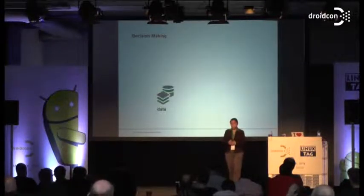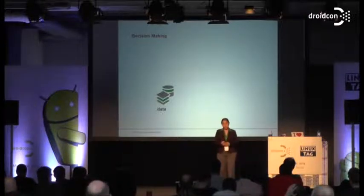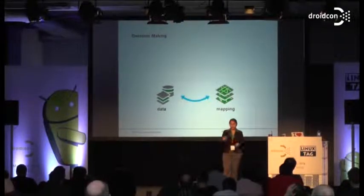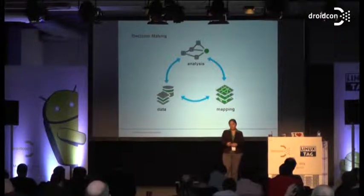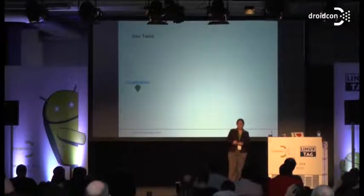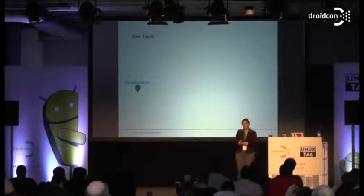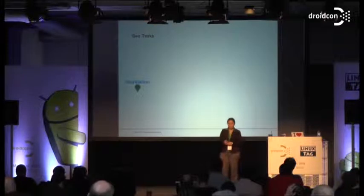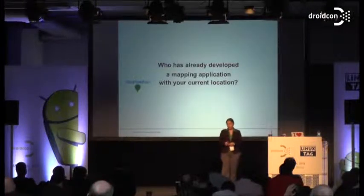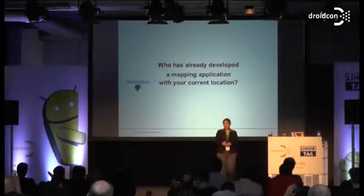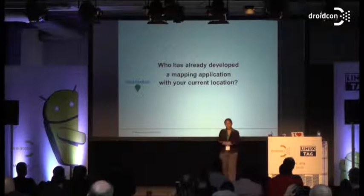Mobile applications are needed for decision-making. First, we have data, then we have maps where we can show the data. We can perform analysis based on this data and visualize it on maps. There are several geo-tasks. The first is localization — 'where am I?' This is really important. Who has already developed a mobile application that uses your current location? Okay, some of you — this is the very basic one for mobile applications.